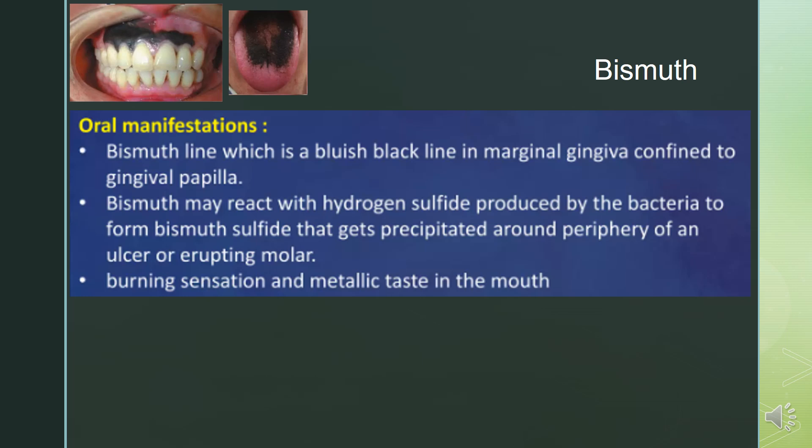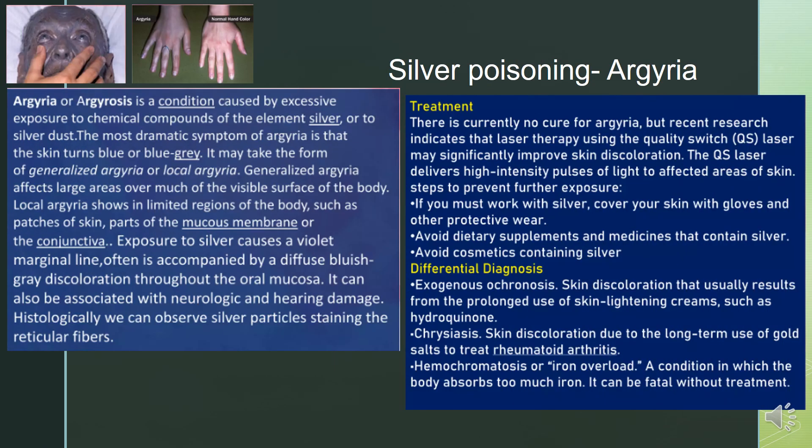Burning sensation and metallic taste in the mouth can be found. Silver poisoning, also called argyria, is a condition caused by excessive exposure to chemical compounds of silver or to silver dust. Local argyria shows in limited regions of the body such as patches of skin, parts of the oral mucosa, or the conjunctiva. The most dramatic symptom is that the skin turns blue or blue-gray. There is currently no cure, but laser therapy using the quality-switched laser may improve skin discoloration. Differential diagnosis includes exogenous ochronosis, psoriasis, or hemochromatosis.